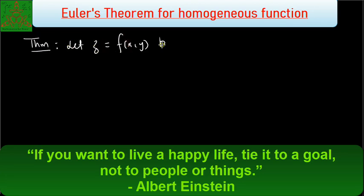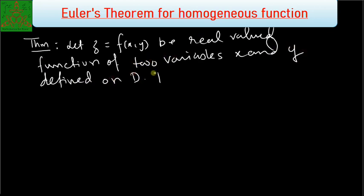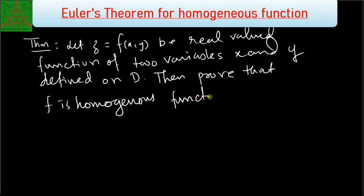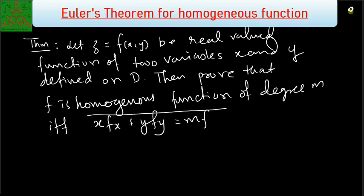Let z = f be a real-valued function of two variables x and y. The theorem states that f is a homogeneous function of degree m if and only if x·f_x + y·f_y = m·f. Here f_x and f_y represent the first-order partial derivatives of f with respect to x and y, since f is a two-variable function.